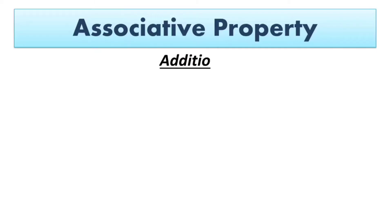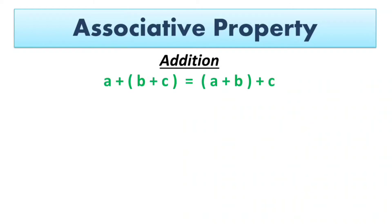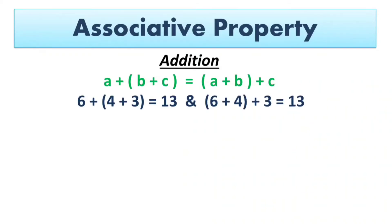The next one is associative property. Associative property is also true for addition and multiplication. When there are three or more numbers added, the sum is the same regardless of the way in which the numbers are grouped. Here we have three variables A, B, and C. In the first case, B and C are grouped, and in the second case A and B are grouped. So we get A plus (B plus C) equals (A plus B) plus C. Let's verify with an example: 6 plus (4 plus 3) equals 13, and (6 plus 4) plus 3 equals 13.